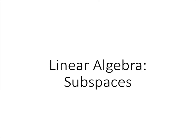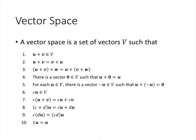In this lecture we'll talk about subspaces. We've talked about vector spaces, and a vector space is a set of objects called vectors that satisfy these ten axioms. We've got two operations: vector addition, where we can add two vectors and get another vector, and scalar multiplication, where we can take a vector and multiply it by a real number and get another vector.